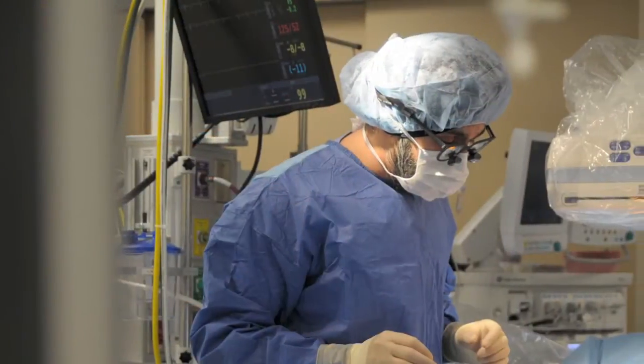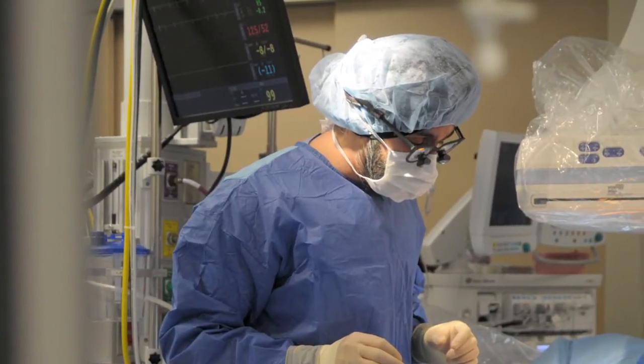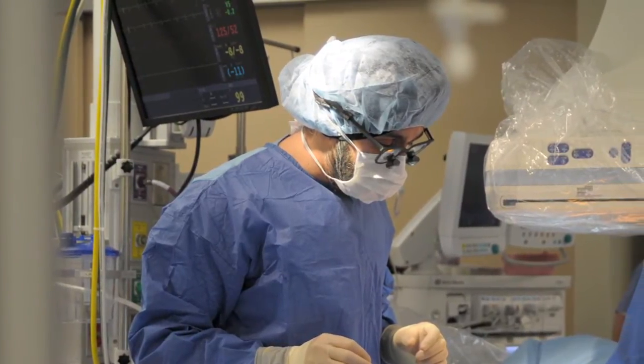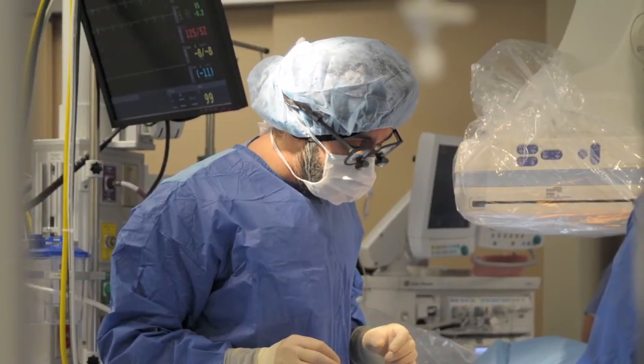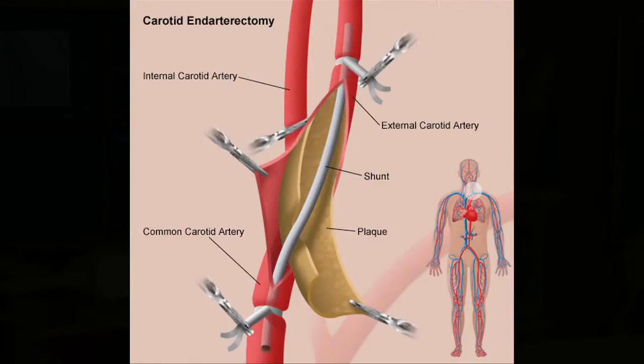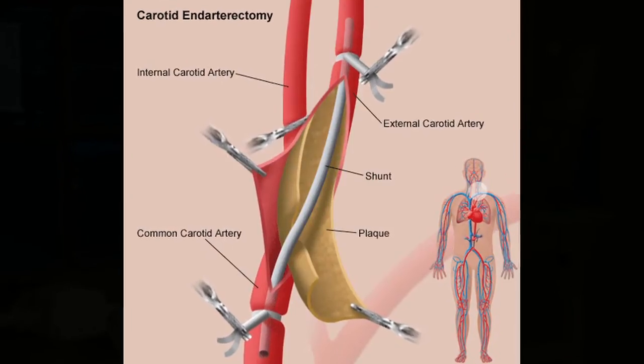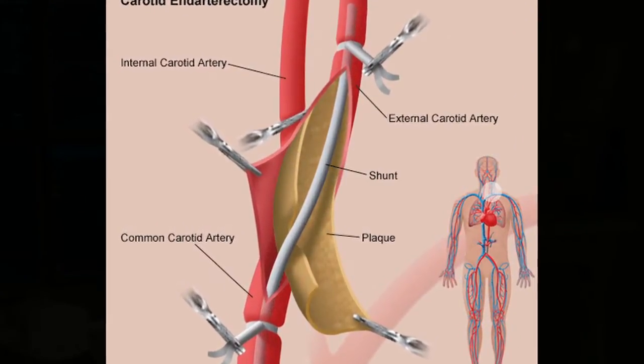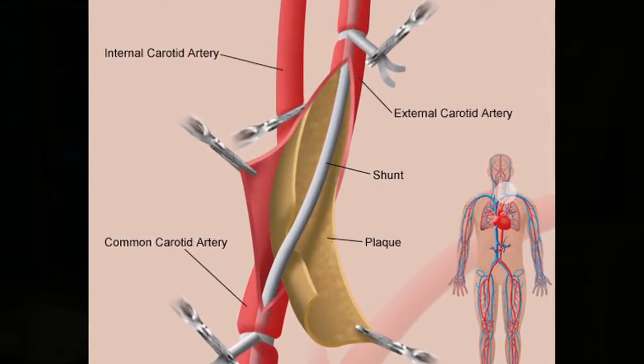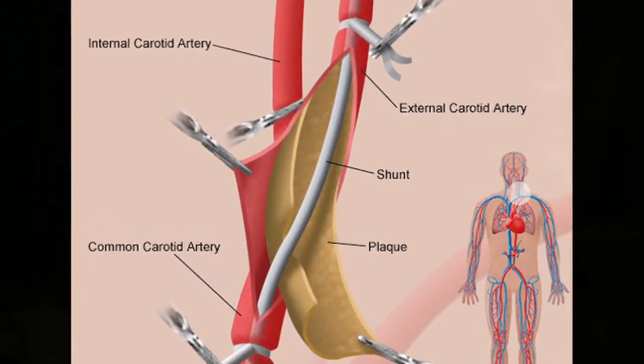The surgical procedure involves an incision about that big on the neck, which is very well tolerated by patients. Oftentimes we do the procedure under local anesthetic, but mostly I prefer to put patients under general anesthetic. The procedure takes about an hour to an hour and a half, where the carotid artery is dissected out and blood is temporarily shunted around the carotid artery where there's a stenosis.